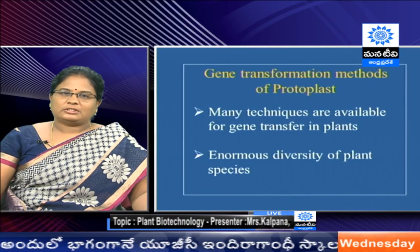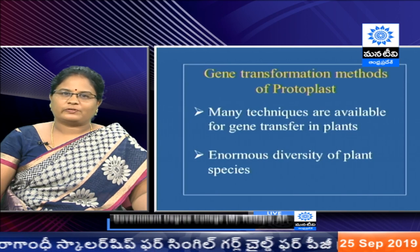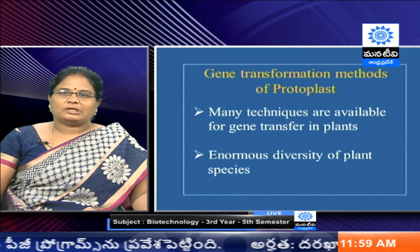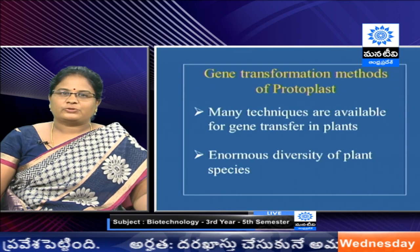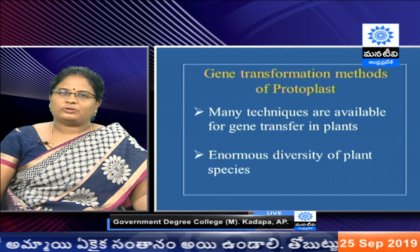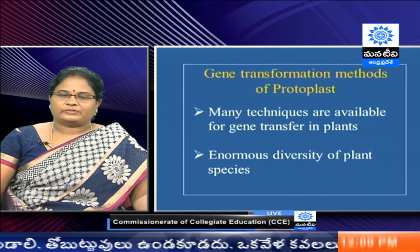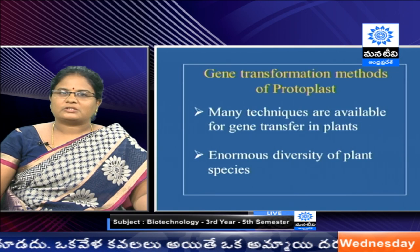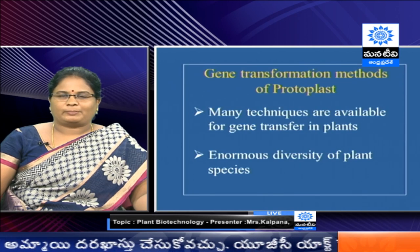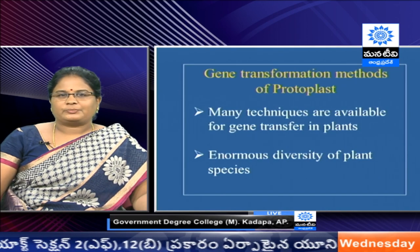In the case of animals, we have a well-established system — in vitro fertilization — where we can manipulate the ovum, zygote, or early stages of the embryo to produce transgenic animals. But in the case of plants, we don't have such a well-established single system to transfer genes to plants. Because of totipotency, the majority of plant cell types are totipotent, so we can manipulate many types of cells.